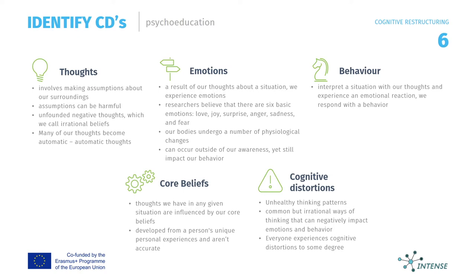When experiencing emotions, our bodies undergo a number of physiological changes. For example, fear can lead the body to enter the fight-or-flight response, which includes an increased heart rate, sweating and the tensing of muscles. It's important to understand that thoughts and emotions can occur outside of our awareness yet still impact our behavior.